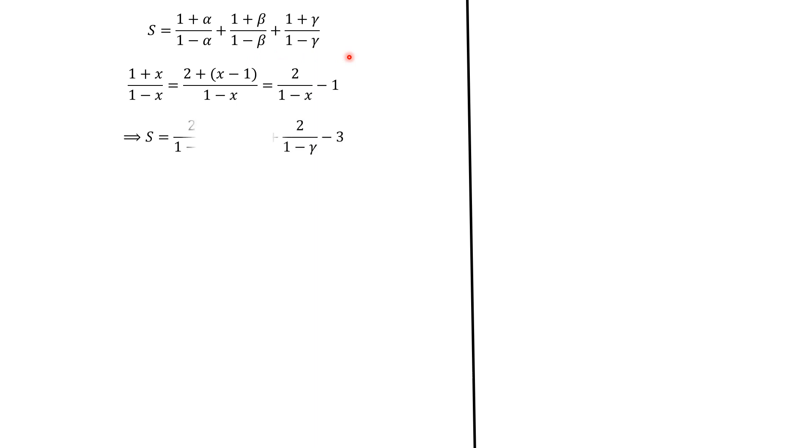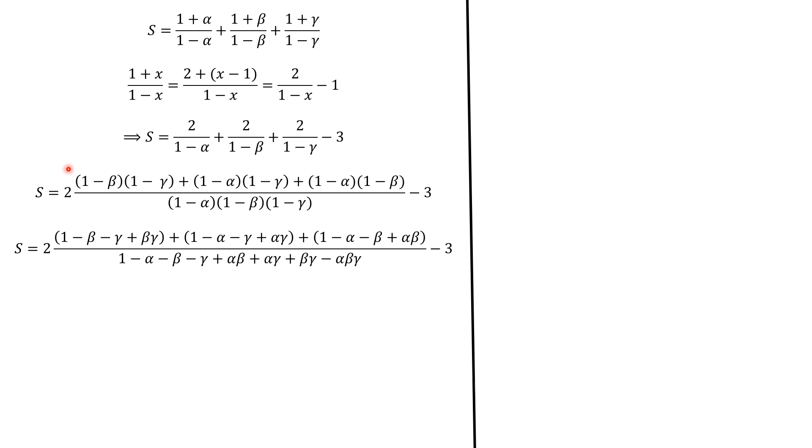Replacing in S yields this outcome. And we push everything to the same denominator. For instance, for this term, we're going to have 1 minus beta multiplied by 1 minus gamma. And we do the same here and here. We expand the terms. For this term, we have 1 minus beta minus gamma plus beta gamma. And we do the same for this term and for that term. We do the same for the denominator. We expand. And we have this. I'll let you have a look on this. Nice.